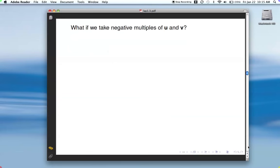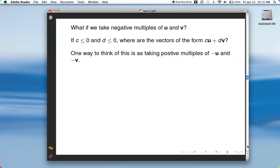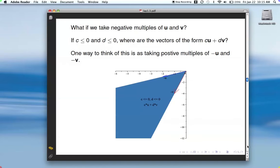If you allow yourself to take negative multiples of u and v, then think about where those vectors would be in the plane. The easiest way, I think, to think about this is to, instead of thinking about taking negative multiples of u and v, think of it as taking positive multiples of negative u and negative v. And if you do that, then it's a similar thing as to what you just saw. So here is negative v. Here's negative u. And so when you take positive multiples of u and v, or positive multiples of negative u and negative v, and then add those two vectors together, you end up with vectors in this region here.